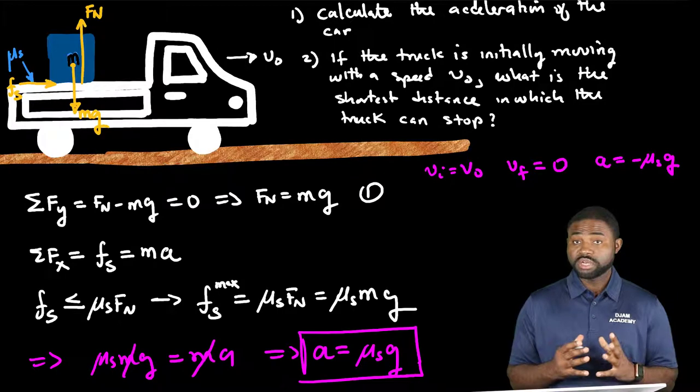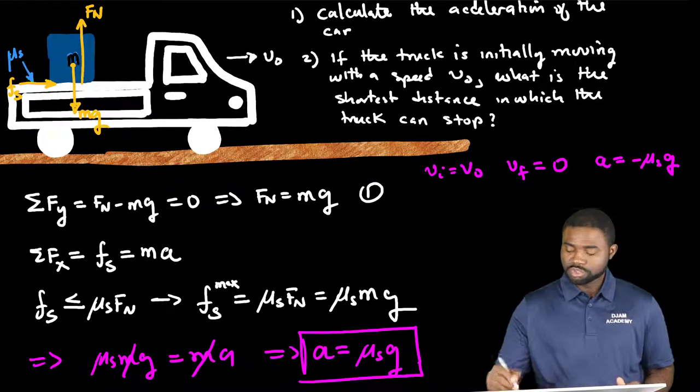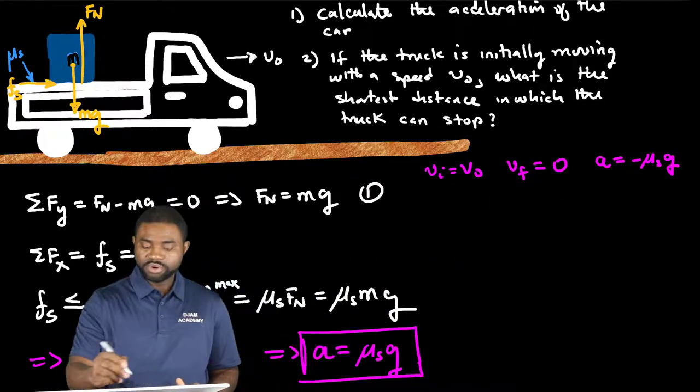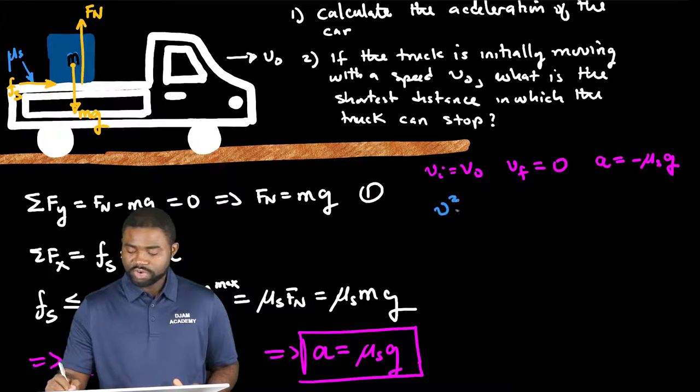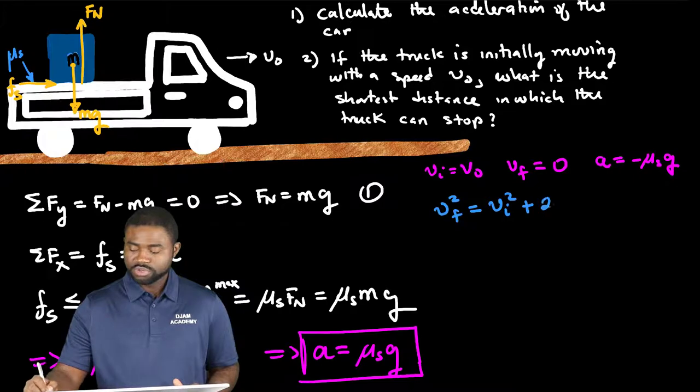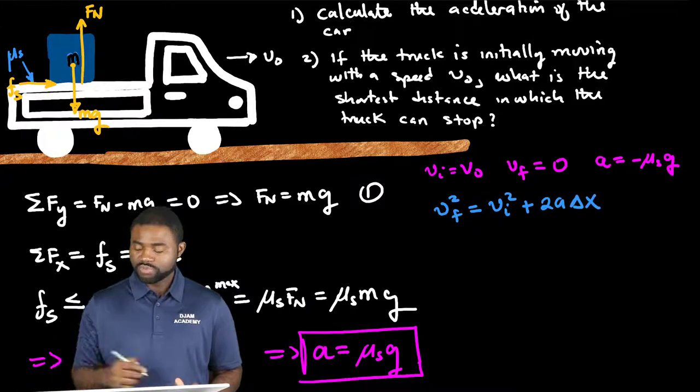So we need to apply the kinematics equations of motion. What I can remember is v final squared is equal to v initial squared plus 2a delta x, and we are looking for that delta x.